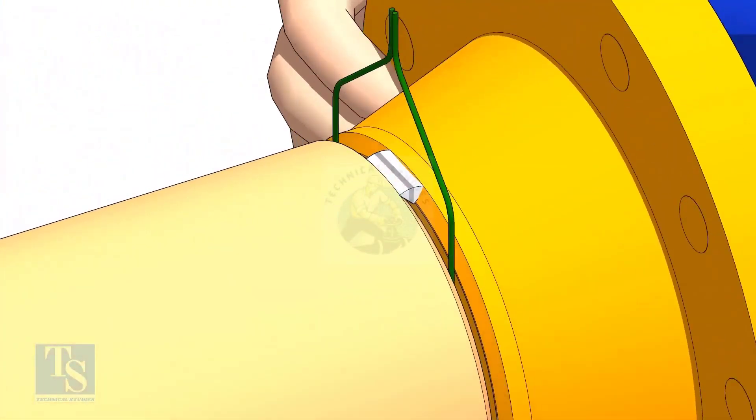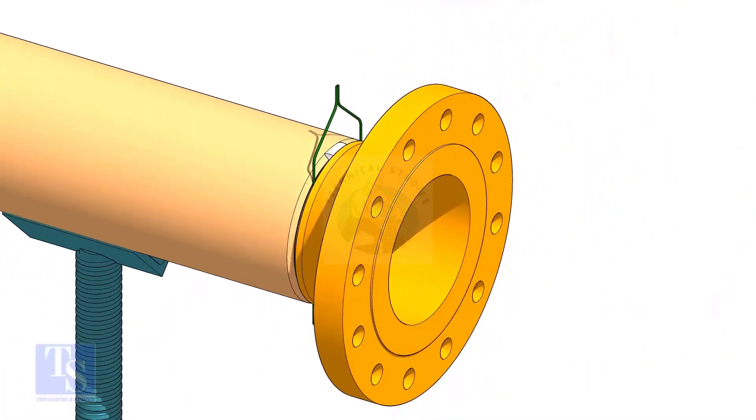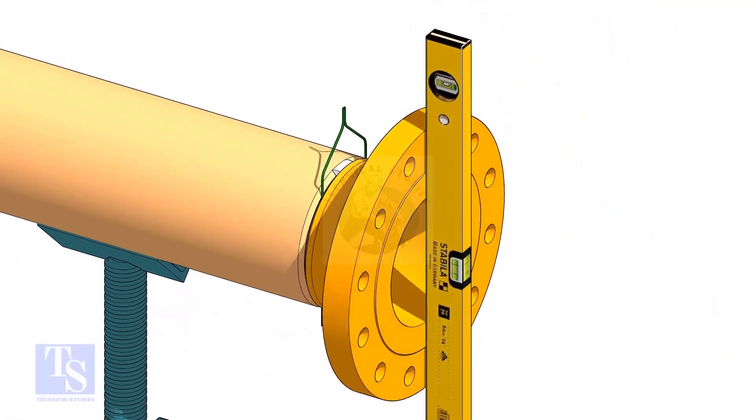Tack weld on the top side of the joint. Check the level of the flange vertically and tack weld on the bottom side of the joint.